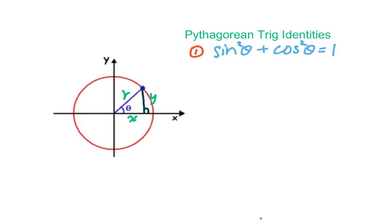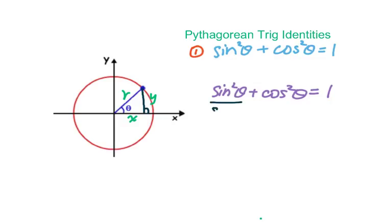For the second one, we're still using sin squared θ plus cosine squared θ equals 1. This time, for both sides, I divide by sin squared θ.